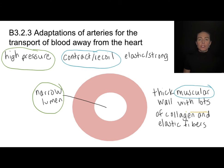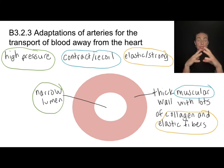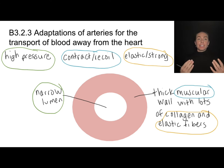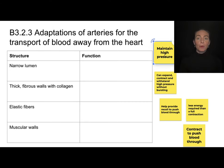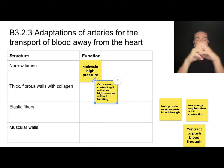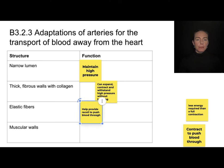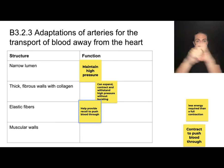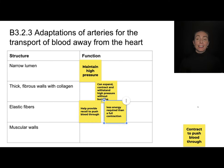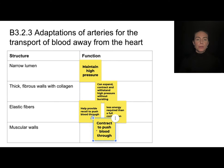The artery also needs to be elastic and strong to withstand high pressure, and that's where the collagen and elastic fibers in the wall are very helpful — they maintain arterial structure so it doesn't burst and allows it to recoil. To summarize: the narrow lumen maintains high pressure; the thick fibrous walls can expand and contract without bursting; and the elastic fibers allow recoil when pressure drops, meaning less energy is needed for a full contraction. The muscles help push blood through. Form and function are very important in transport.